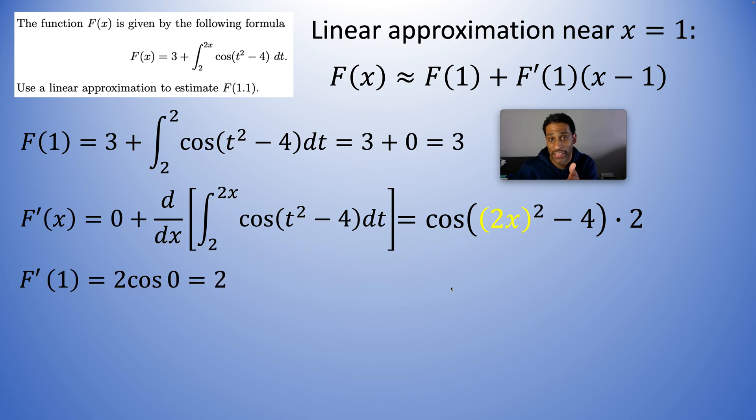So look what happens. 2x will be equal to 2. 2 squared will be 4. 4 minus 4 is 0. It's the cosine of 0. Cosine of 0 is 1 times 2. So the derivative at 1 is 2 and the function at 1 is 3.